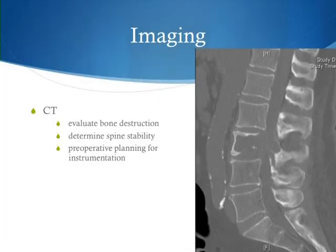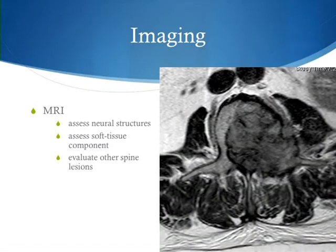CT is good for bony anatomy — it helps evaluate bone destruction, extent of osteolysis, determine spinal stability, and is very important for preoperative planning for instrumentation placement. MRI is also necessary to evaluate the neural structures, how much canal compromise there is, how much invagination into the canal there is, the soft tissue component not seen with x-ray or CT, and to evaluate other lesions and potential skip lesions. Oftentimes we as a surgeon may be the first person to diagnose this patient with cancer, and we have to come up with a primary — this patient needs a full workup, which can be done by the surgeon, primary care physician, or oncologist. Typically this entails a CT of chest, abdomen, and pelvis looking for a primary focus of tumor, plus chest x-ray, skeletal surveys, bone scan for other sites of skeletal metastasis, and targeted laboratory markers.